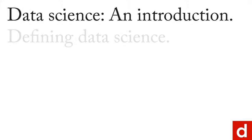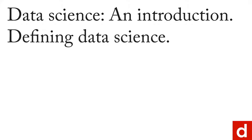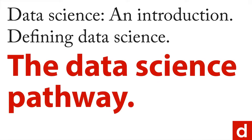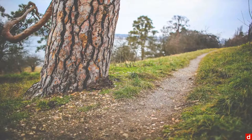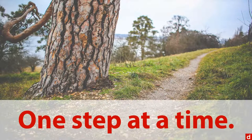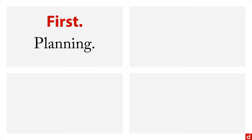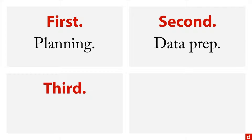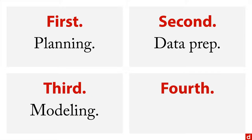The next step in our data science introduction and our definition of data science is to talk about the data science pathway. When you're working on a major project, you got to do one step at a time to get from here to there. In data science, you can take the various steps and put them into a couple of general categories: planning, data prep, the actual modeling of the data, and follow-up. There are several steps within each of these.